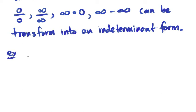For example, let's take a look at the limit as x approaches π over 2 of tan x over secant x.